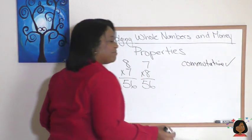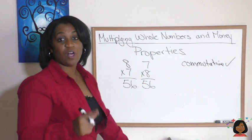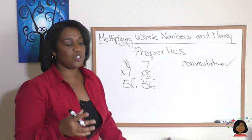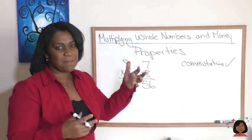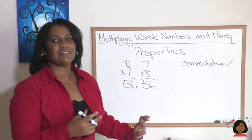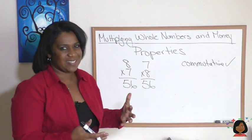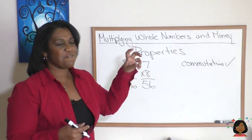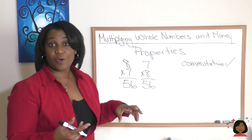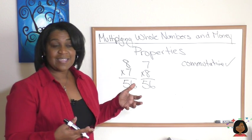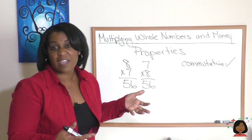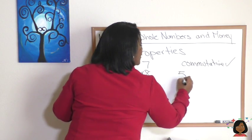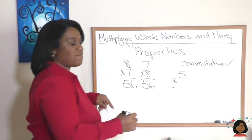We also learned about the identity property. The identity property is when you do something to your first number and you end up getting the same identical answer. For example, in addition, five plus zero is five, so the additive identity is zero because we still get a five.